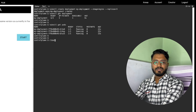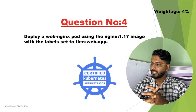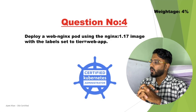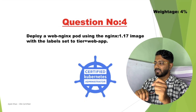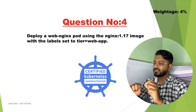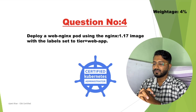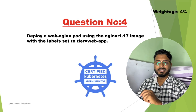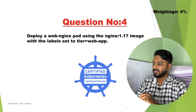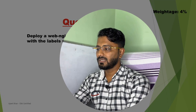Let us also check the pods: kubectl get pods — as you can see, three pods are running. So we are done with the third question. Question number four is: deploy a web nginx pod. The name of the pod is given as 'web-nginx', using the nginx:1.17 image — that is the image and version we need to use. We also need to set the label as tier=webapp.